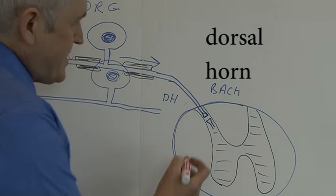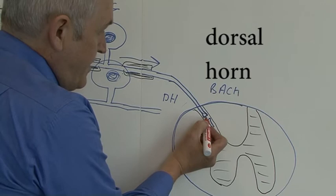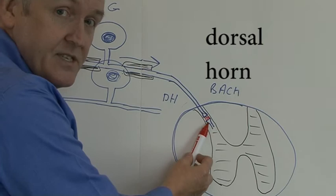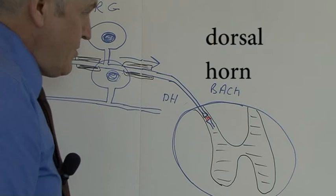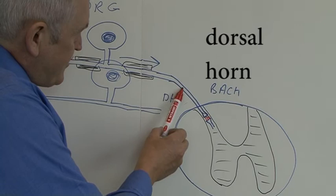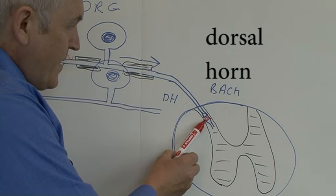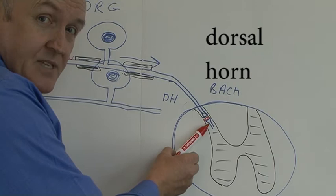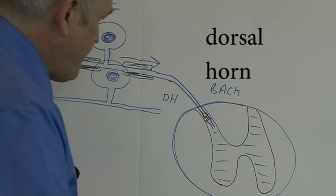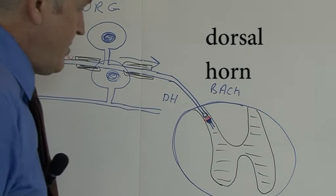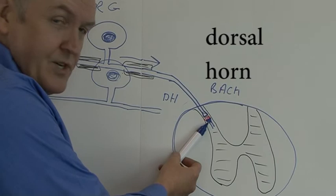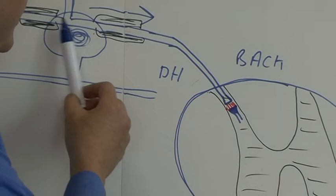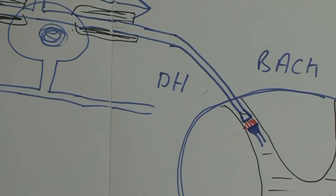A chemical transmitter is released from the terminal part of the first neuron, diffusing across the synaptic gap to depolarize the secondary neuron. In the A-delta fibres, this transmitter is glutamate. So the electrical nerve impulse arrives along the first neuron, causes release of glutamate, which diffuses across the synaptic gap and depolarizes the post-synaptic membrane, generating a new nerve impulse in the secondary neuron.